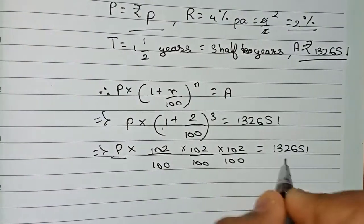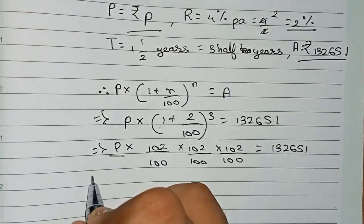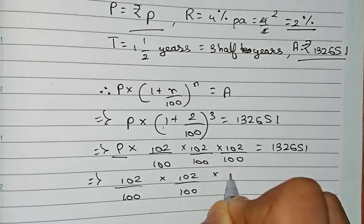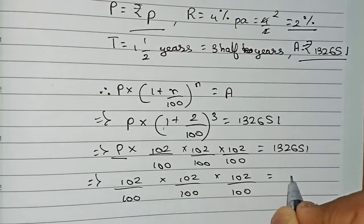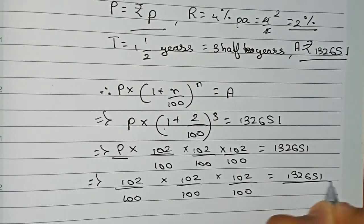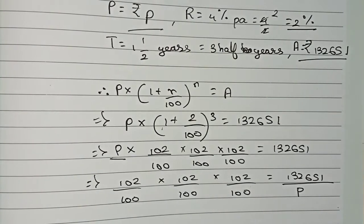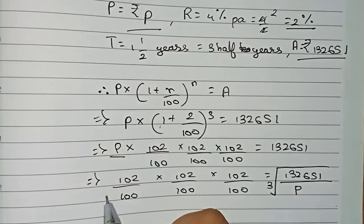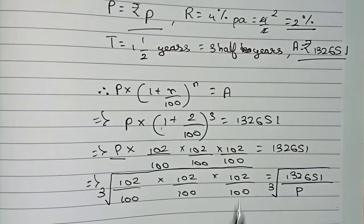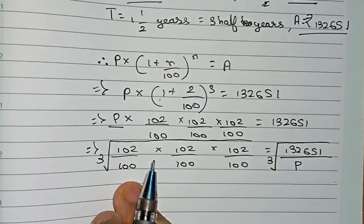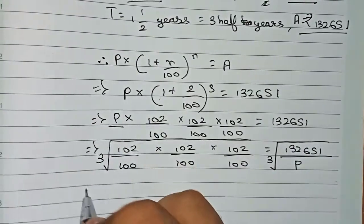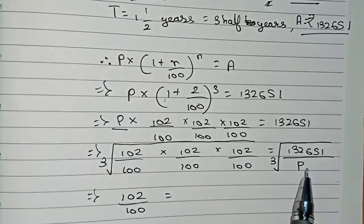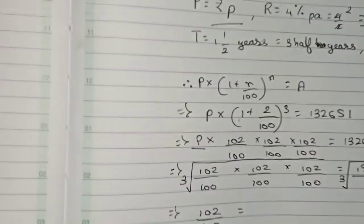Now taking P to the other side — since it was multiplication, it goes as division. So we get (102/100) × (102/100) × (102/100) = 1,33,651 / P. Now we take the cube root on both sides: cube root of (102/100)^3 on the left equals cube root of 1,33,651 / P on the right.